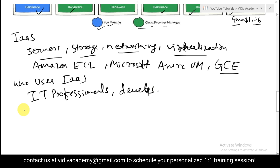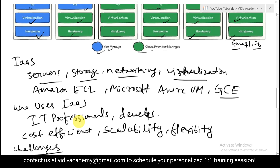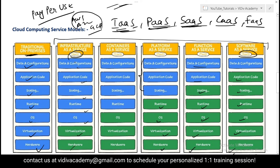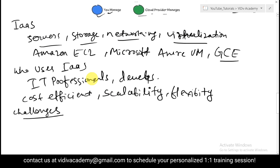IaaS is used by IT professionals, developers, and system administrators who require flexibility and control over their infrastructure. The benefits include cost efficiency, high scalability, and flexibility. The challenge is that it requires in-depth IT knowledge to manage the infrastructure, since the cloud provider only handles hardware and virtualization — everything else like OS, runtime, scaling, and application code is your responsibility.